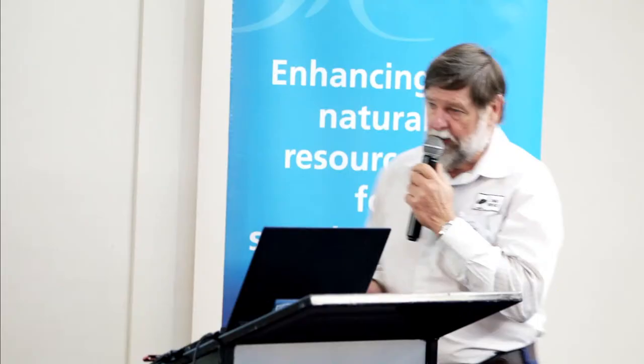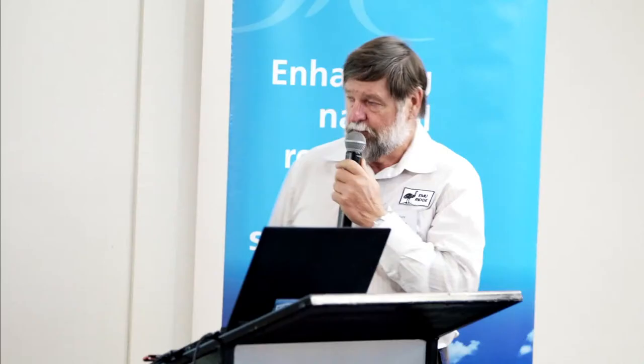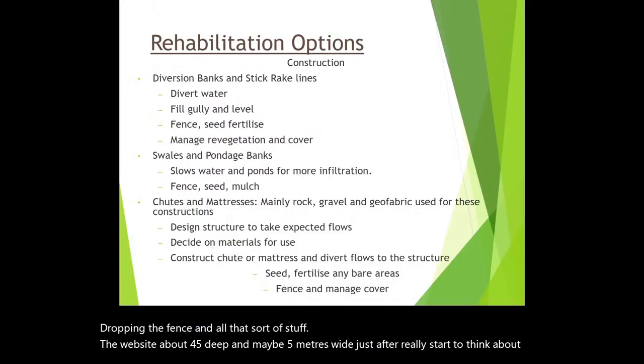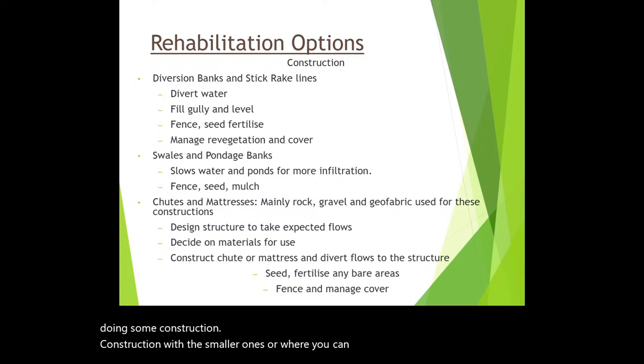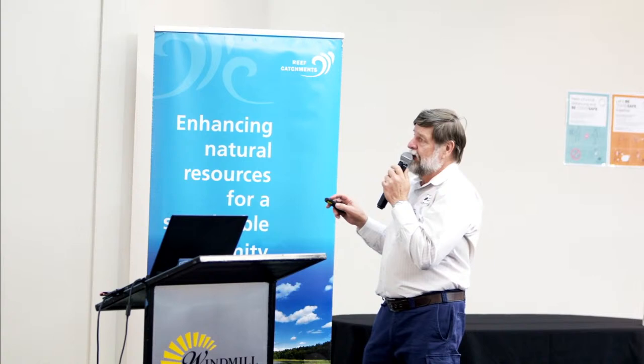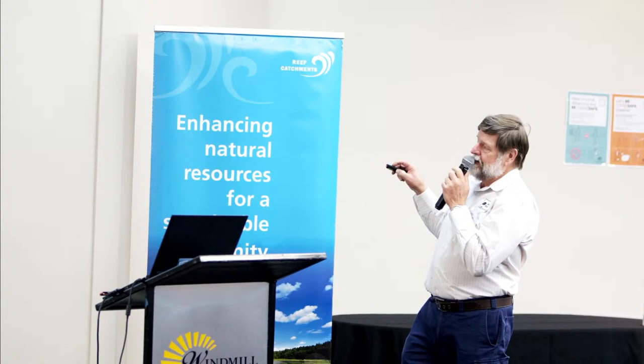Options for rehab: you can do the lock-up and fence approach for smaller gullies. But once you get something over about 0.5 metres deep and maybe 5 metres wide, you really have to start thinking about construction. For smaller ones where you can find a stable outlet, you can use diversion banks — the idea is to divert water away from the gully head, fill the gully head in, re-grass it and seed. You need to be very careful to save topsoil, strip it off, do your construction and put topsoil back on, otherwise you won't get re-vegetation.